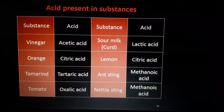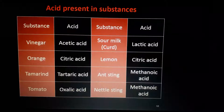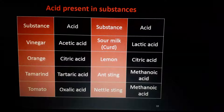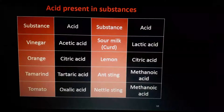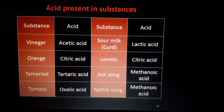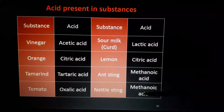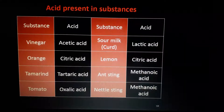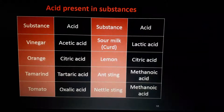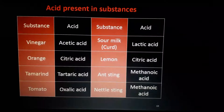Here are some acids found in common sources — you already know most of them. Vinegar contains acetic acid; citric acid is in oranges and lemons; milk contains lactic acid; tamarind contains tartaric acid; tomato contains oxalic acid. Ant sting contains methanoic acid, and nettle sting also contains methanoic acid — these acids cause pain and irritation. Just imagine if ant sting or wasp sting came with sulfuric acid — we cannot even imagine that.